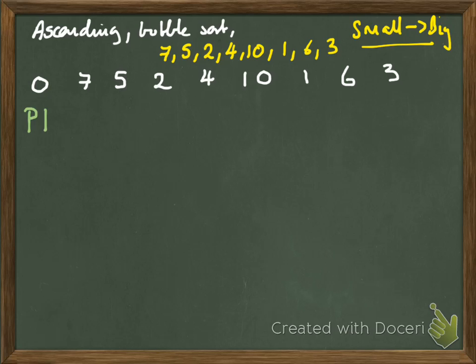Pass 1. Consider 7 and 5, swap. Consider 7 and 2, swap. Consider 7 and 4, swap. Consider 7 and 10, 7 is okay. Consider 10 and 1, swap. Consider 10 and 6, swap. Consider 10 and 3, swap. And 10 goes down there. End of pass 1. Once you're out the pass, you're fine. Think, do whatever you want. Have a breather, look around, check your lucky pen is still working. I'm just going to mark that off. It's just a habit.